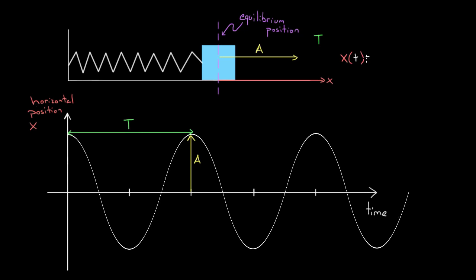So what would this look like? This is either a sine or a cosine—that's the first choice. What I always do is I just look at the beginning and say: at t equals zero, this one is starting at a maximum.